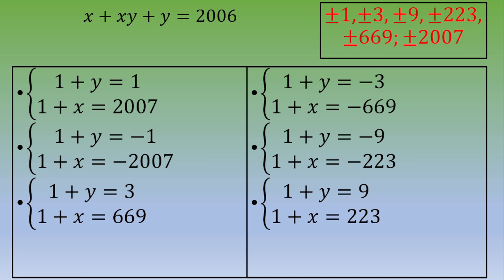We get a list of systems to solve. The first system has (1 plus y) equals 1 and (1 plus x) equals 2007, and you can flip these two numbers by symmetry. Also remember we must consider plus or minus for all divisor pairs.